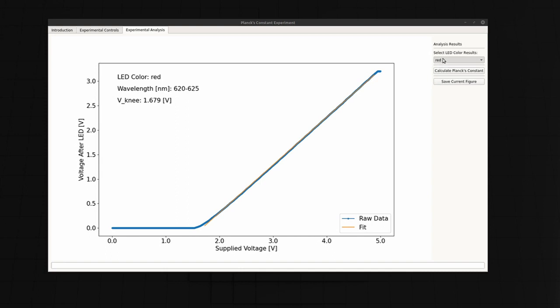We can look at the results for any color LED that was used to perform the experiment. These are the results for the blue LED. This LED has a wavelength of 460 to 465 nanometers, which is smaller than the previous red LED. And each photon of the blue light has more energy, and thus the knee voltage is increased to 2.467 volts.